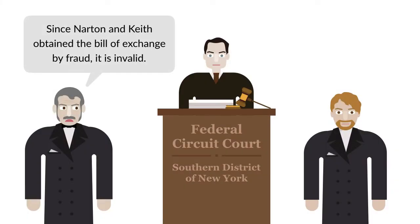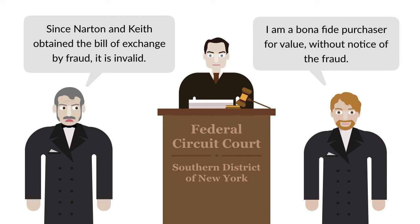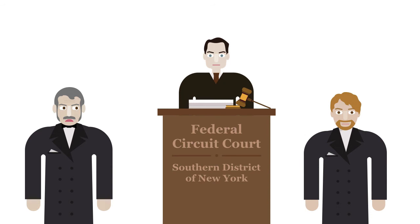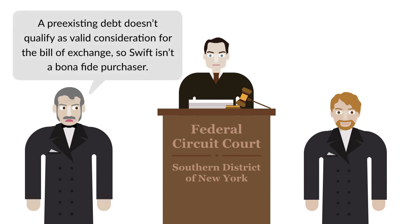Tyson argued that since Norton and Keith obtained the bill of exchange fraudulently, it was invalid and he didn't have to honor it. Swift responded that he was a bona fide purchaser for value without notice of the fraud, so he took the bill of exchange free of the initial fraud. Tyson countered that a pre-existing debt didn't qualify as valid consideration for the bill of exchange, so Swift wasn't a bona fide purchaser and Tyson didn't have to pay him.